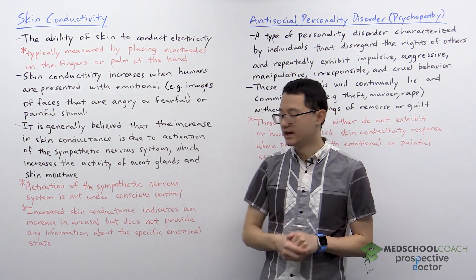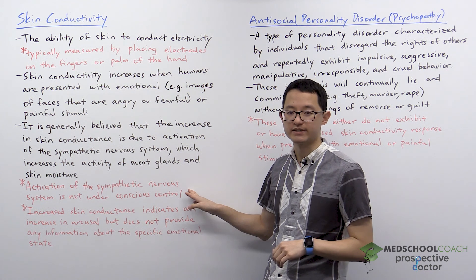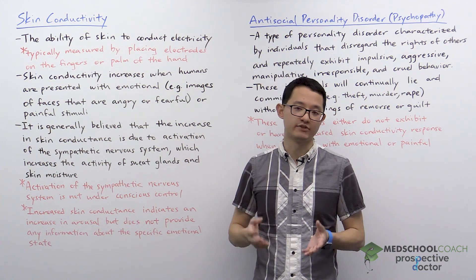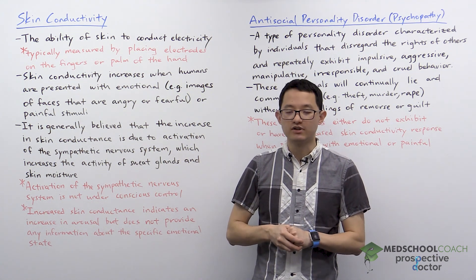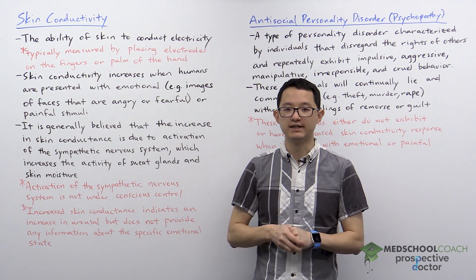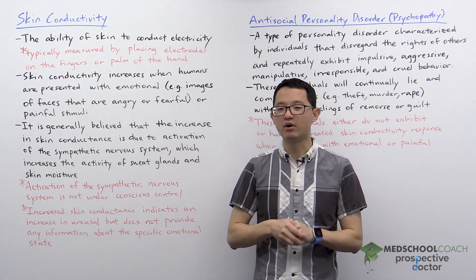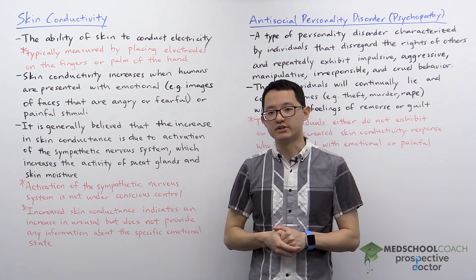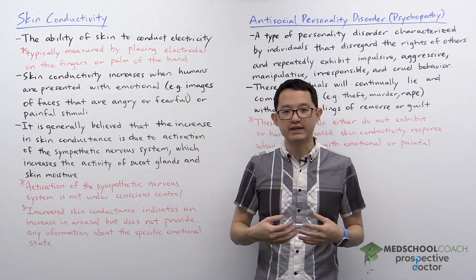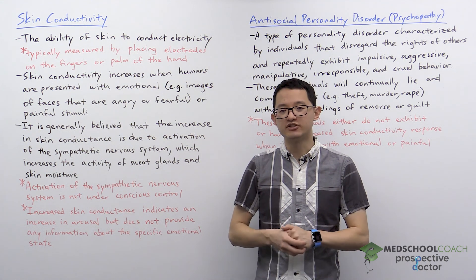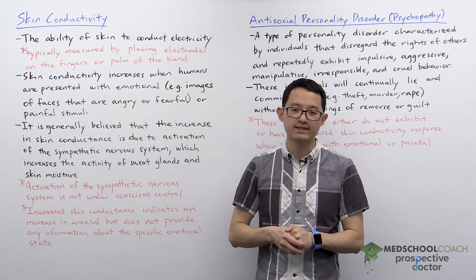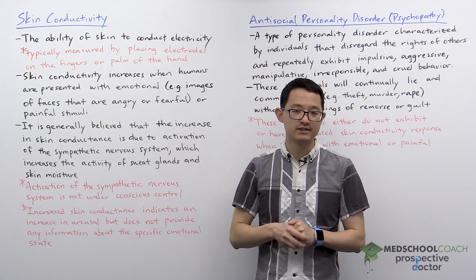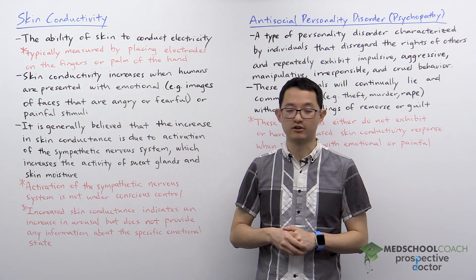This is important for a couple of reasons. Number one, activation of the sympathetic nervous system is not under conscious control — it's not voluntary, so you can't just will it to happen. That's why polygraphs or lie detector tests will often measure skin conductivity. However, this is a bit problematic because skin conductivity is not a measure of specific emotions. It won't tell you if a person is happy, angry, or fearful. Instead, it's just a measure of arousal, meaning an increase only tells you that they are more aroused, not anything about the specific emotion they're feeling.